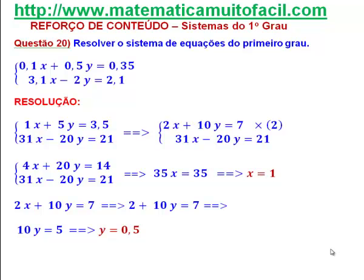Do primeiro grau, mais uma questão para a gente resolver. É um sisteminha do primeiro grau. 0,1x mais 0,5y é igual a 0,35. A segunda equação: 3,1x menos 2y é igual a 2,1. Eu só trouxe essa questão porque ela é simples, mas ela trabalha com números decimais e não é comum a gente ver sistemas com números decimais.